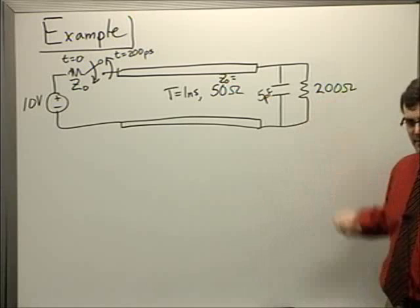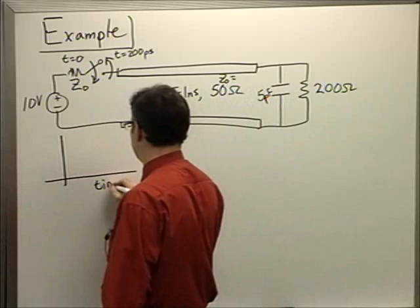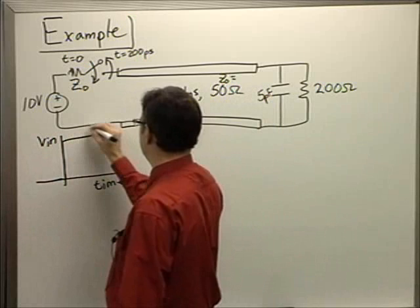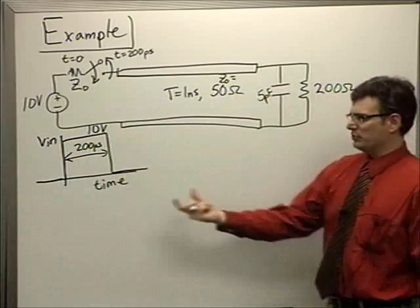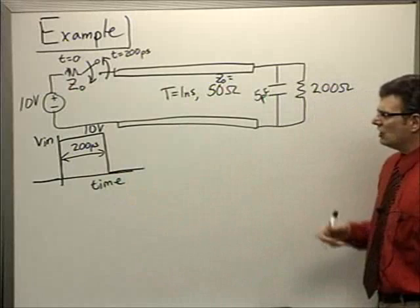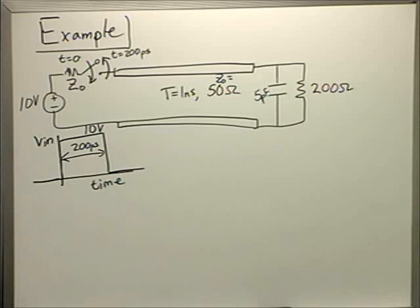In the time domain, my input voltage jumps up to 10 volts at time equals zero, and then 200 picoseconds later it drops down to zero volts — a clock cycle or data bit of some sort. How does this parasitic capacitance distort the situation? Step number one: we're going to apply linear superposition.